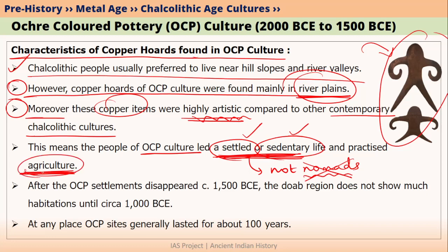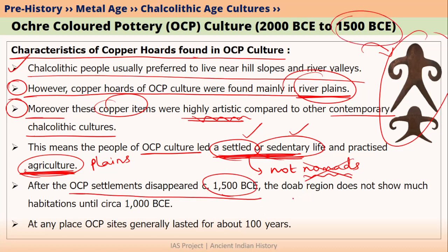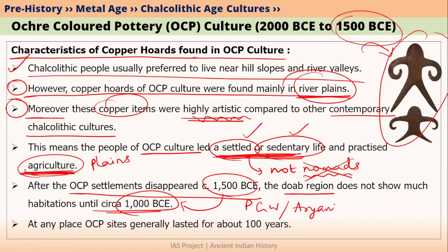Agriculture was practiced because these people were living in the fertile plains of rivers. OCP cultures almost declined by 1500 BCE. When OCP cultures declined by 1500 BCE, we do not have much habitation in Ganga Yamuna Doab, so up to almost 1000 BCE we do not find much history of Ganga Yamuna Doab. We will talk more about this region in PGW culture as well as when we talk about Aryans and Vedic culture.